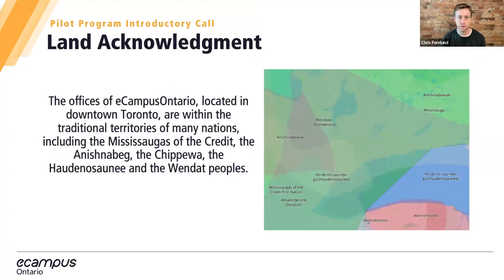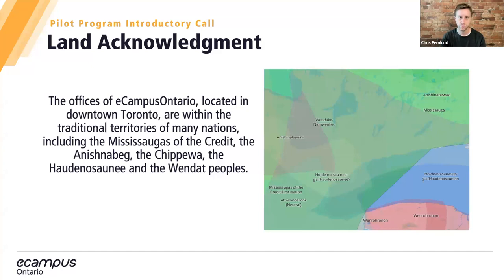I'd like to take a moment to start with land acknowledgements. For eCampus Ontario, it's important for us to acknowledge the traditional territories in which we live and work as part of our commitment to decolonization and Truth and Reconciliation calls to action. We acknowledge the land we are meeting on, which is Toronto — the traditional territory of many nations, including the Mississaugas of the Credit, the Anishinaabek, the Chippewa, the Haudenosaunee, and the Wendat peoples. Toronto is also home to many other diverse First Nations such as the Inuit and Métis peoples, and is covered by Treaty 13 with the Mississaugas of the Credit.